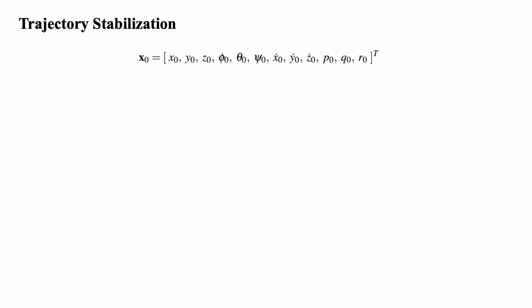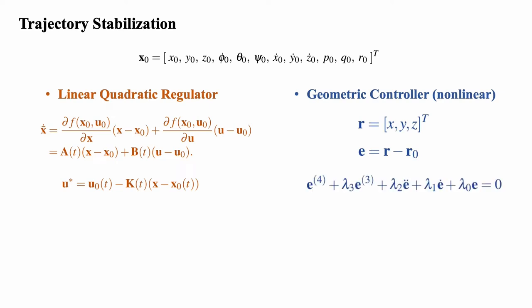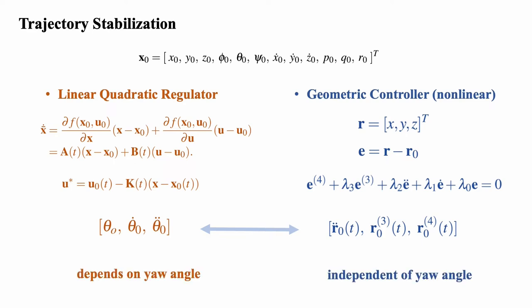Once we have the optimized trajectory, we can either utilize the LQR controller to stabilize it, or we can choose to use a geometric controller which takes in the position error and higher-order derivatives of that. The higher-order derivative of the nominal position actually corresponds to the nominal orientation. The main difference between these two controllers is that the LQR depends on the yaw angle, while the geometric controller does not.